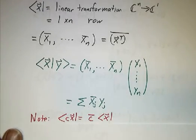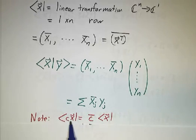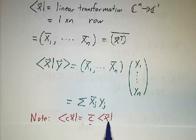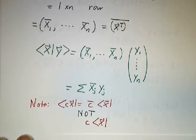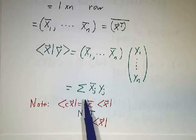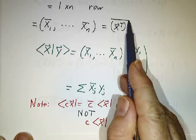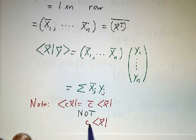Note that you can take the bra for any vector, but the bra for cx is not c times the bra for x — it's c-bar times the bra for x. This 'braing' operation, where you take vectors and turn them into rows, requires taking a conjugate. So it's not linear; it's conjugate-linear, or antilinear.